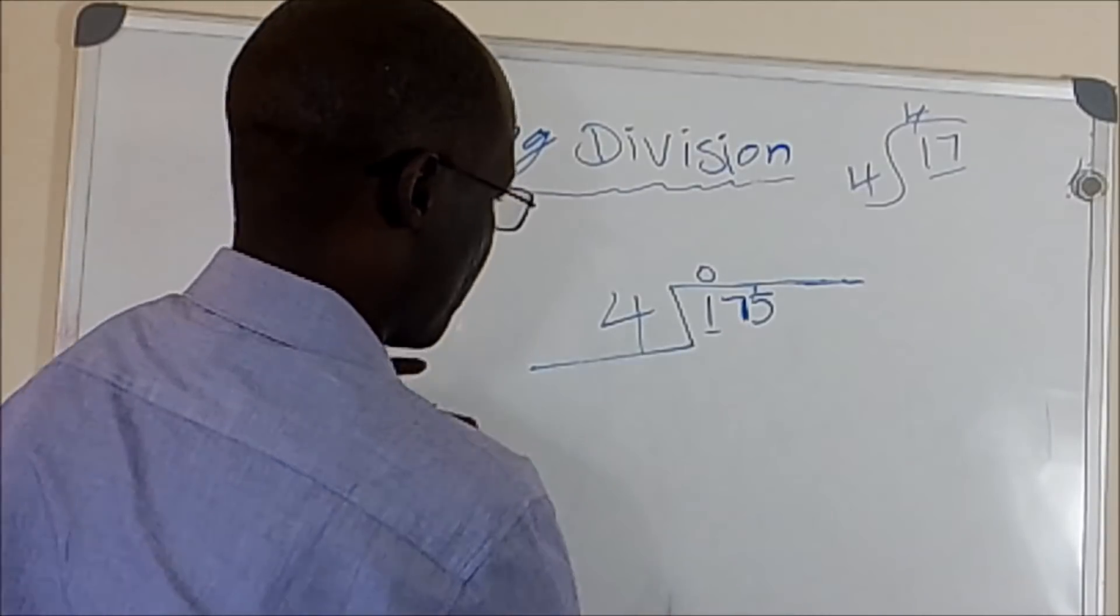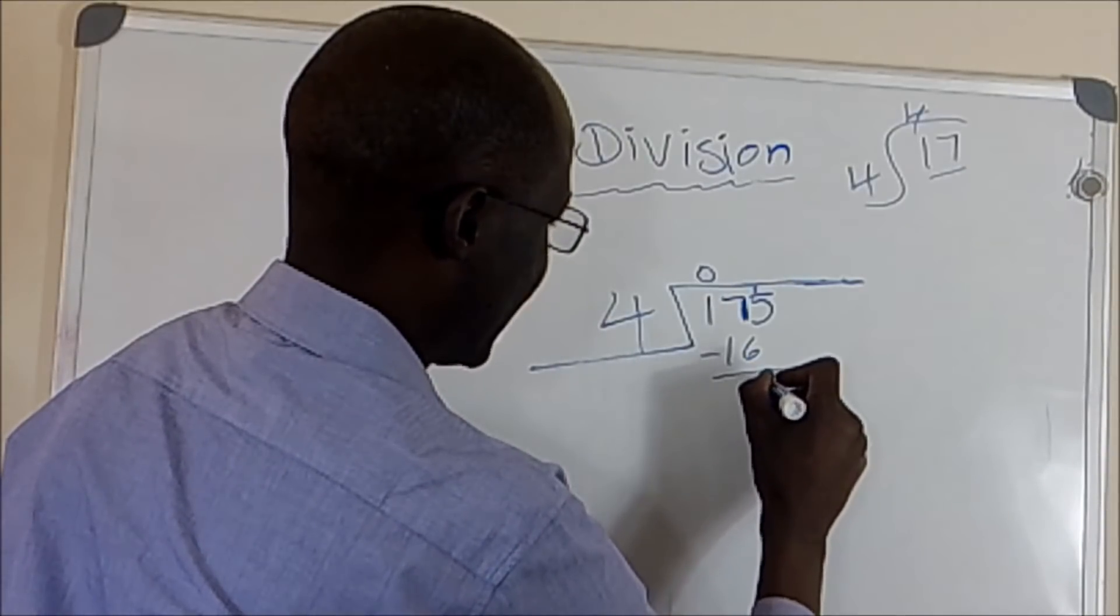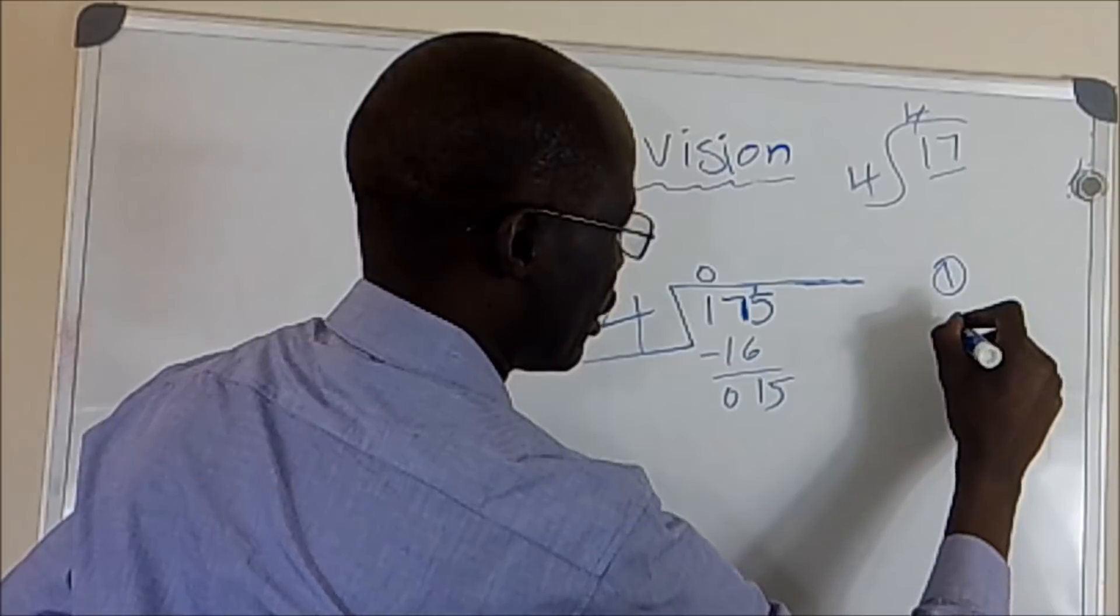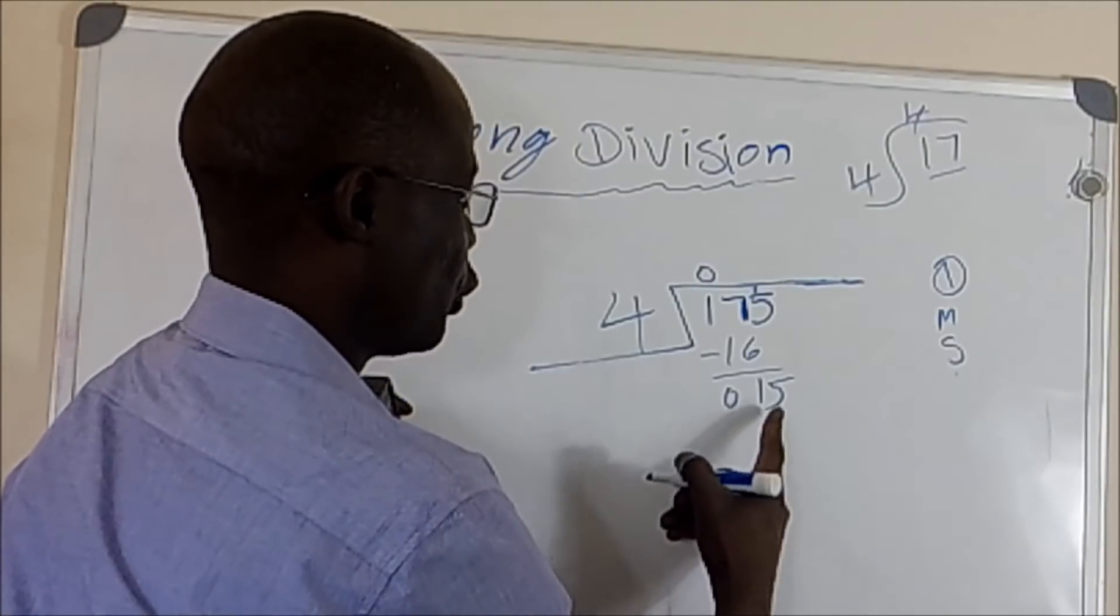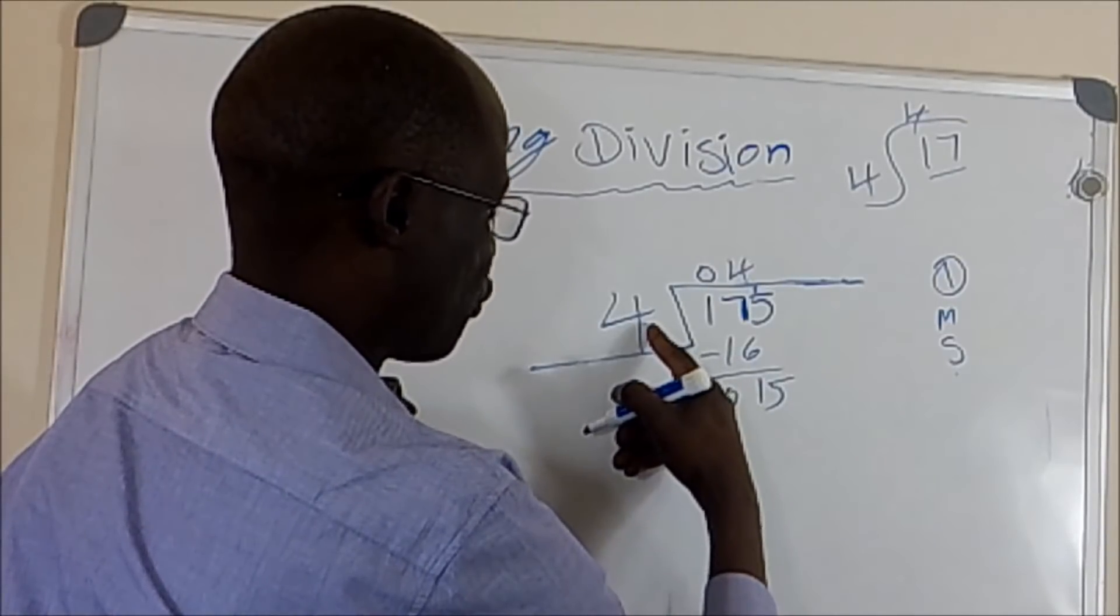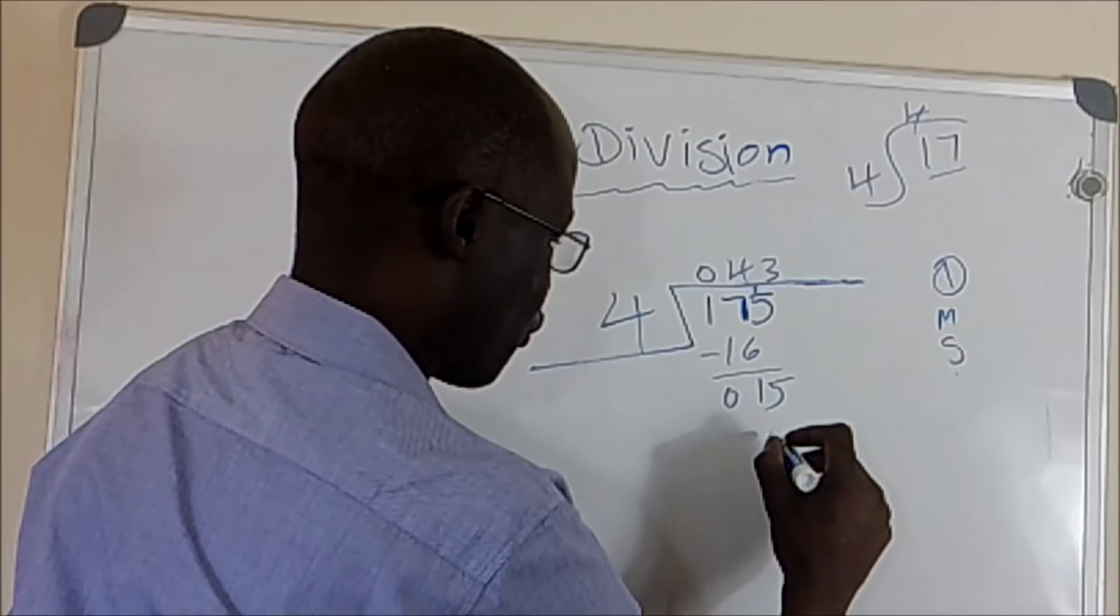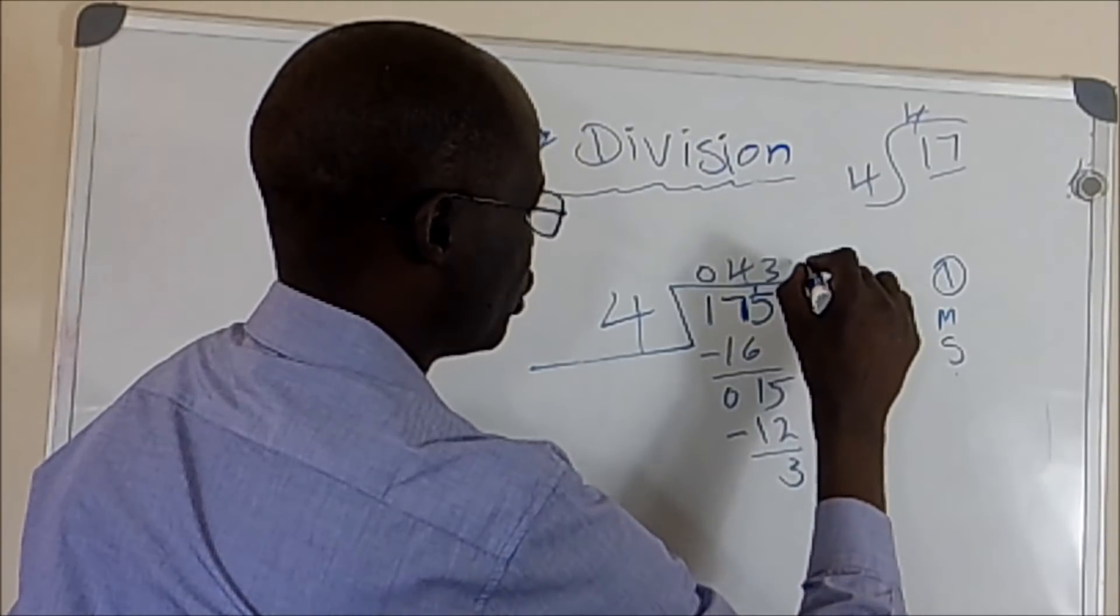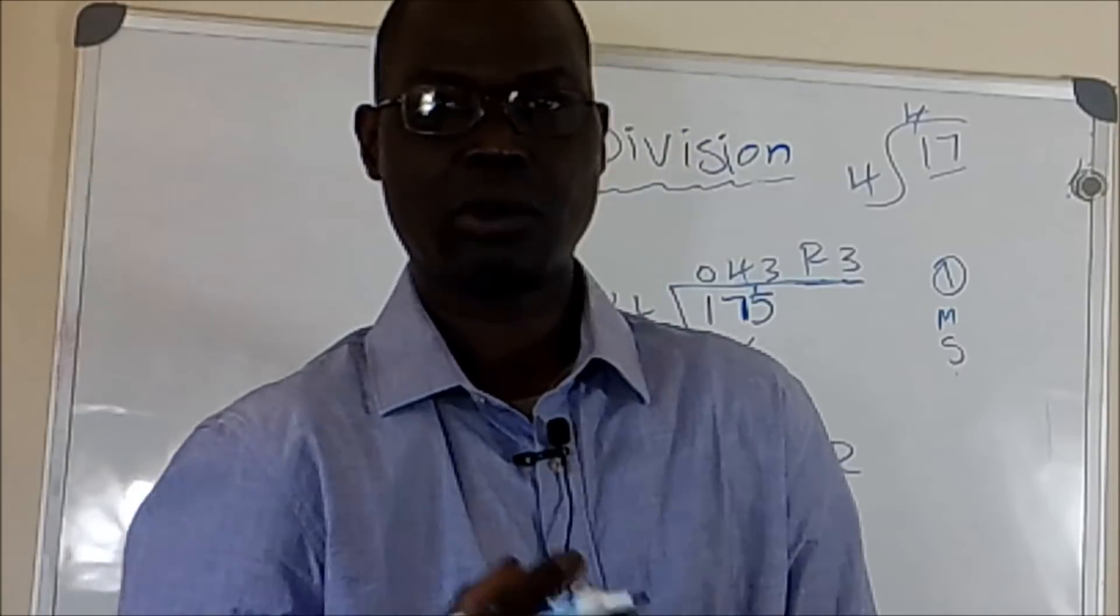And we subtract. So we're going to subtract 16 from 17, we're going to have 1. And then we have 5. So the way we say it, we say division, multiply, subtract, and drop like what we're doing right now. So you have 4, and we still have 15. 15 divided by 4 is greater than 4. So it would be 3. We know 3 times 4 is 12. So we subtract, the remaining R, which should be R3. And that's our solution for this problem.